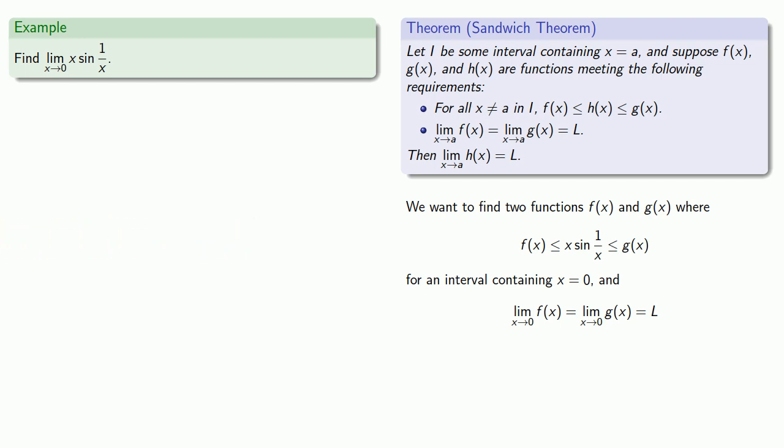And in this case, because we're dealing with the sine of something, one of the things we know is that the sine of something is always between negative 1 and 1. And so this tells us that x times the sine of something is always between minus x and x. And so that gives us a pair of functions f and g that sandwich x sine of 1 over x in between them.